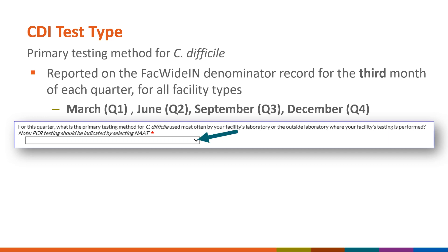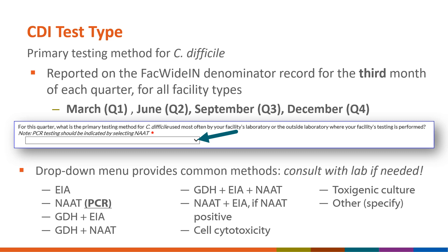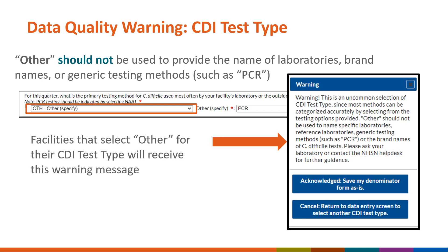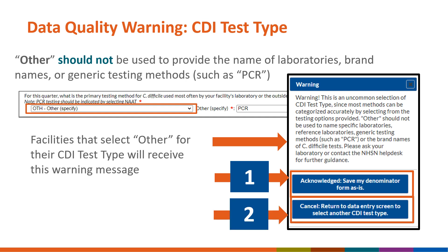A drop-down box is available on the form that provides the common methods used for C. difficile testing. The pre-populated list covers all common tests used by labs across the country. Please do not select other as your CDI test type if possible. If you do select other, you will be required to use the free text entry field to provide the type of test your laboratory uses. If other is selected, a pop-up warning message will appear when you save the form. You can either return to the summary form to select another CDI test type, or acknowledge the warning and save the form without making any changes.